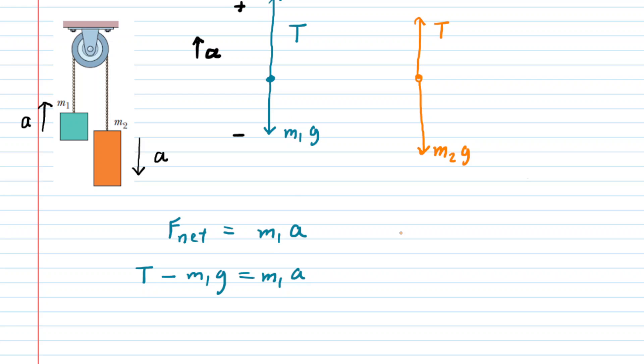We'll leave that for now and turn over to the other block. Same idea, we'll say that F net is equal to M2 times a. Recall that the acceleration acting on block 2 is pointing in this direction, so we will arbitrarily call the downward direction positive and the upward direction negative. And therefore, we have the positive M2g minus the tension, and then that's going to equal M2 multiplied by a.